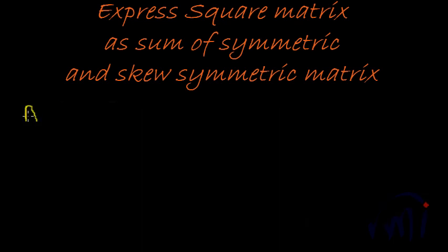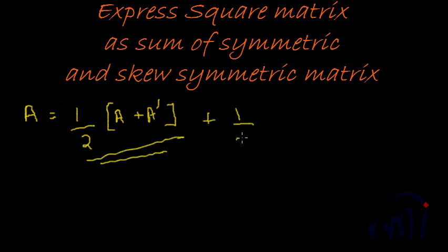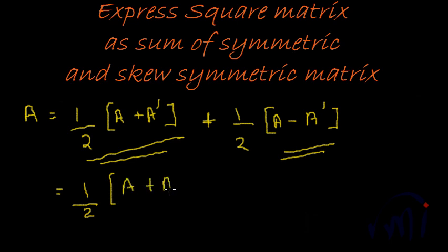So, given a matrix A, it can be always written as 1 by 2 times of A plus A transpose which will give you the symmetric part and 1 by 2 of A minus A dash which is the skew symmetric matrix. And if we simplify it, we will still find that we still get A again. If we take 1 by 2 common, A plus A dash plus A minus A transpose will give us 1 by 2 of 2A which is equal to A.